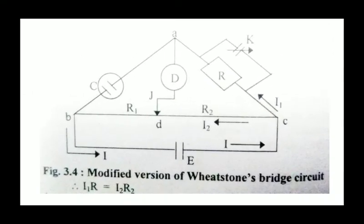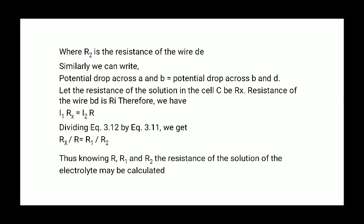The current I from battery gets divided into two parts at C. The passage of current through any resistance is accompanied with potential drop across the resistance. It is given by product of current into resistance. At the null point, the points A and D are at the same potential. For this, potential drop across C and A equals potential drop across C and D. Therefore, we can write potential drop across A-B is equal to potential drop across D-B.